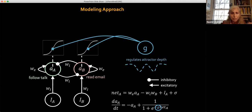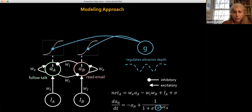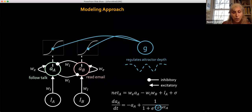Critically, this is where the nonlinearity comes in. The activity of these units is a sigmoid saturation function of their net input. The gain G regulates the attractor depth — the higher the gain, the more I react to all signals and pump up my activity. From the neuroscientific perspective, the gain could reflect the modulatory effects of neurotransmitters such as dopamine on processing, and different levels of gain could be optimal for different types of situations.